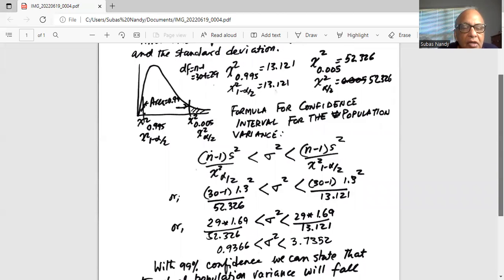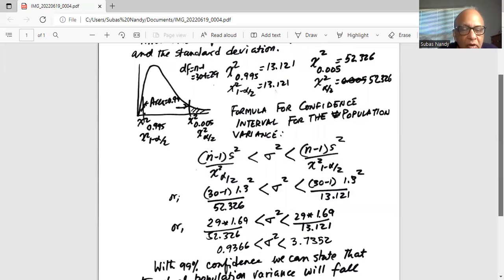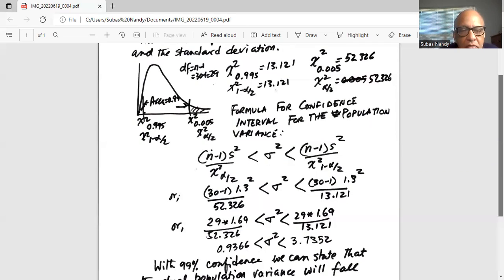We know n is 30, so 30 minus 1, and s is given as 1.3 in the problem statement, so 1.3 squared divided by chi-square α/2 which is 52.326, less than σ² and the upper boundary or